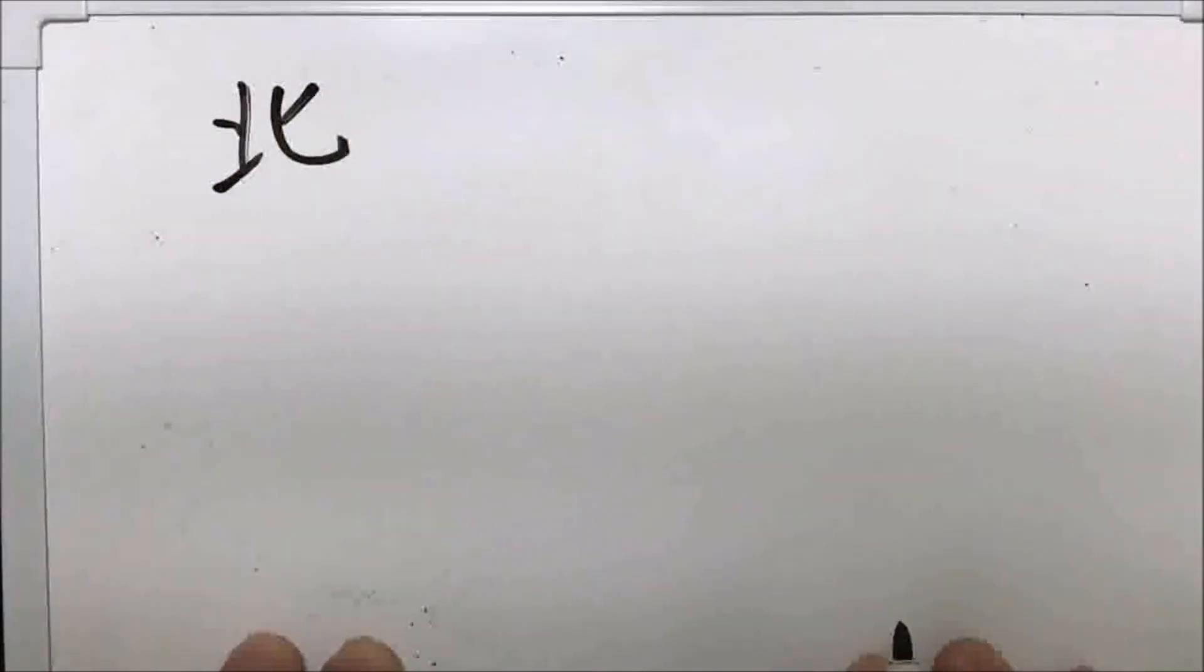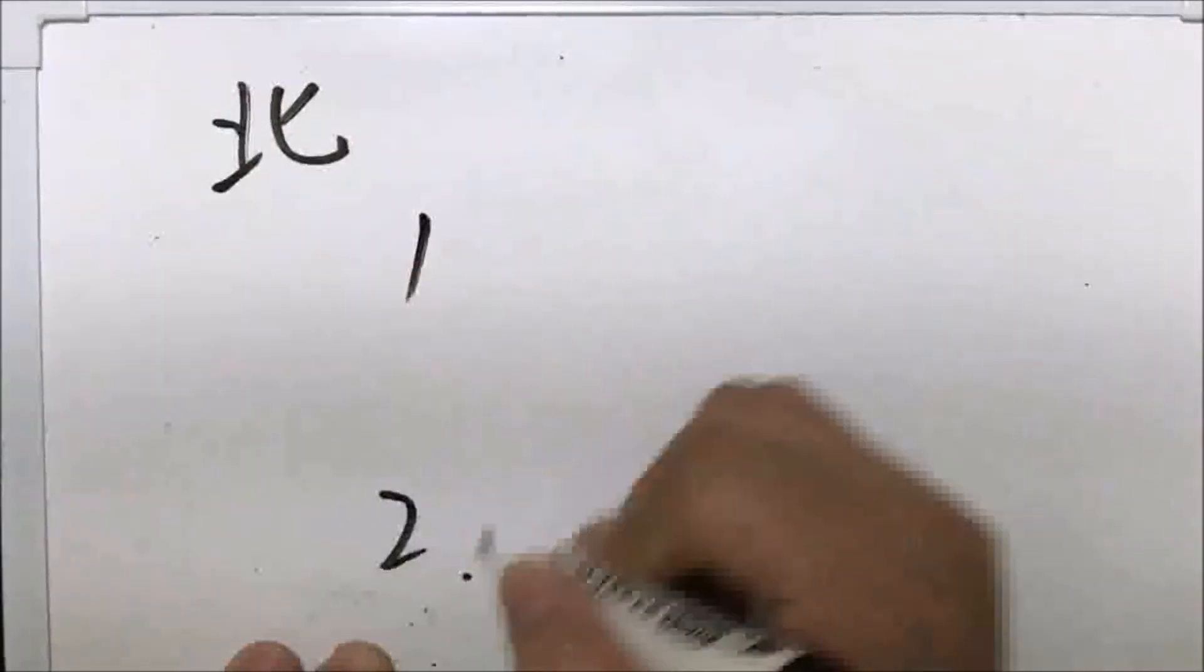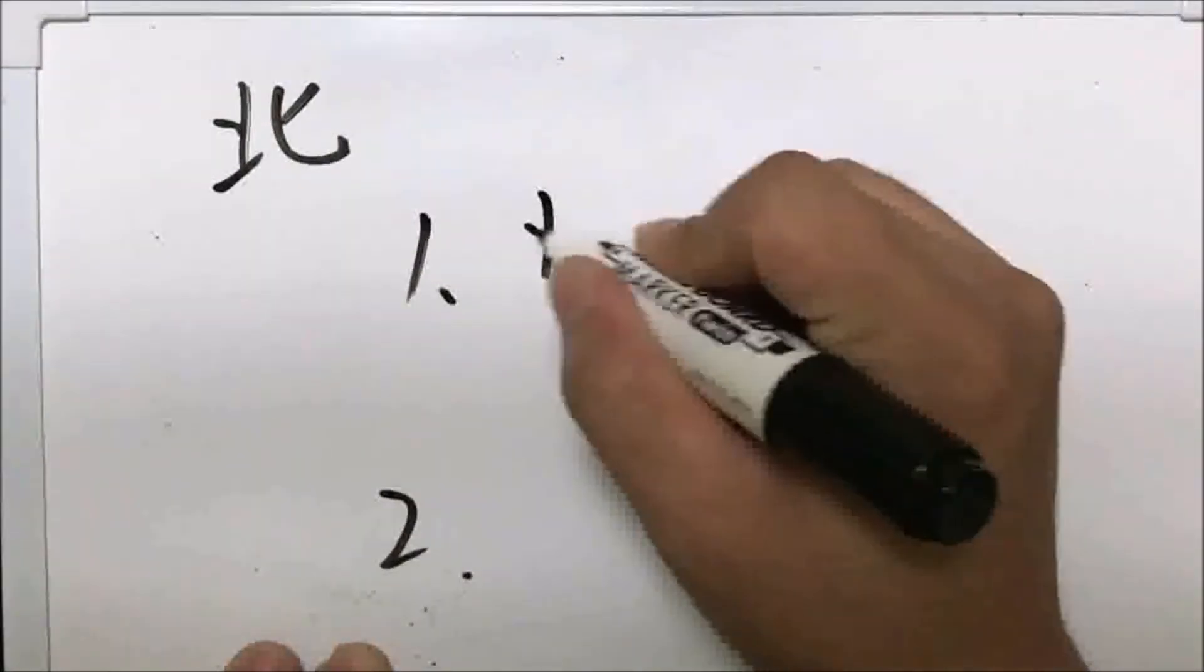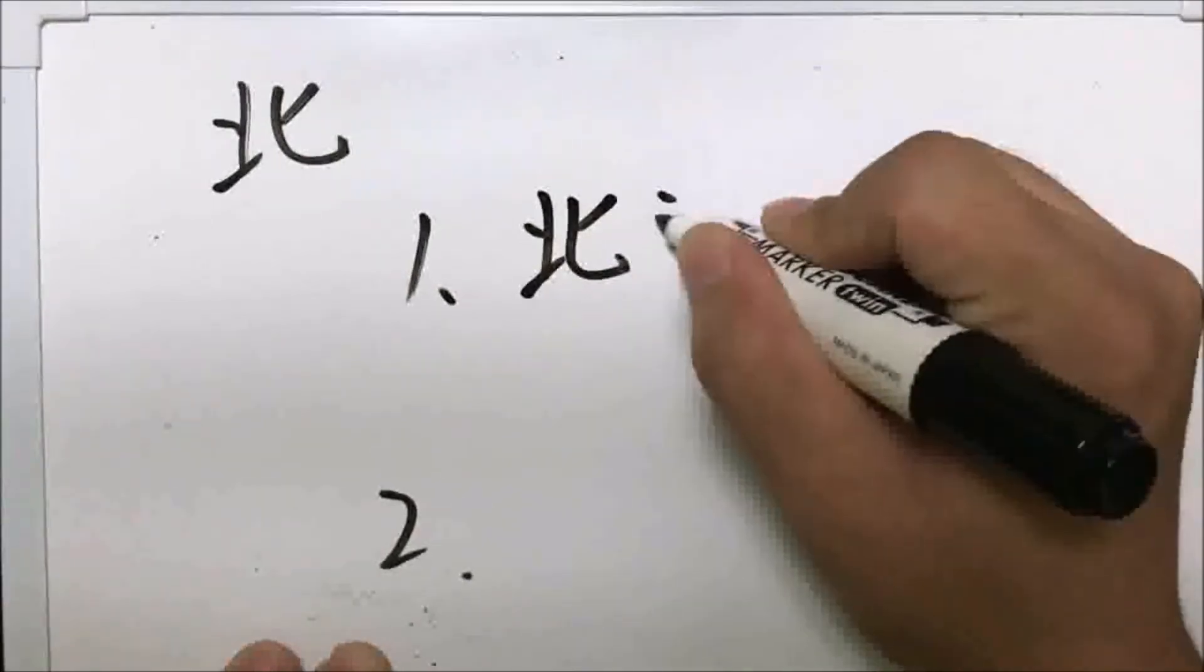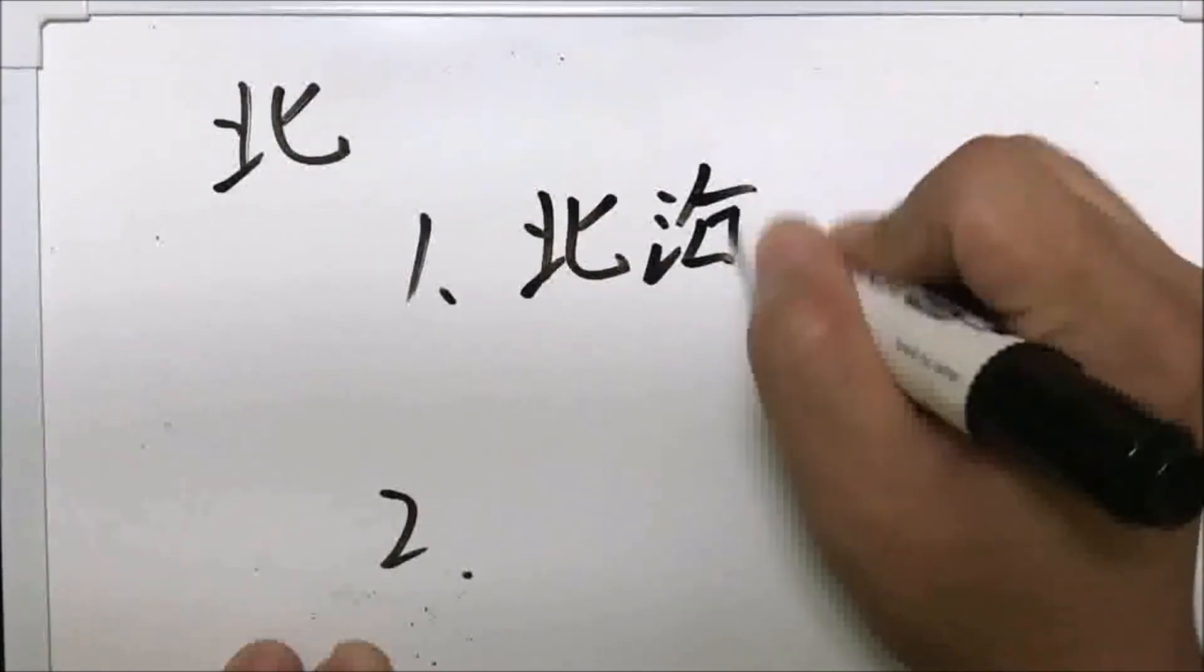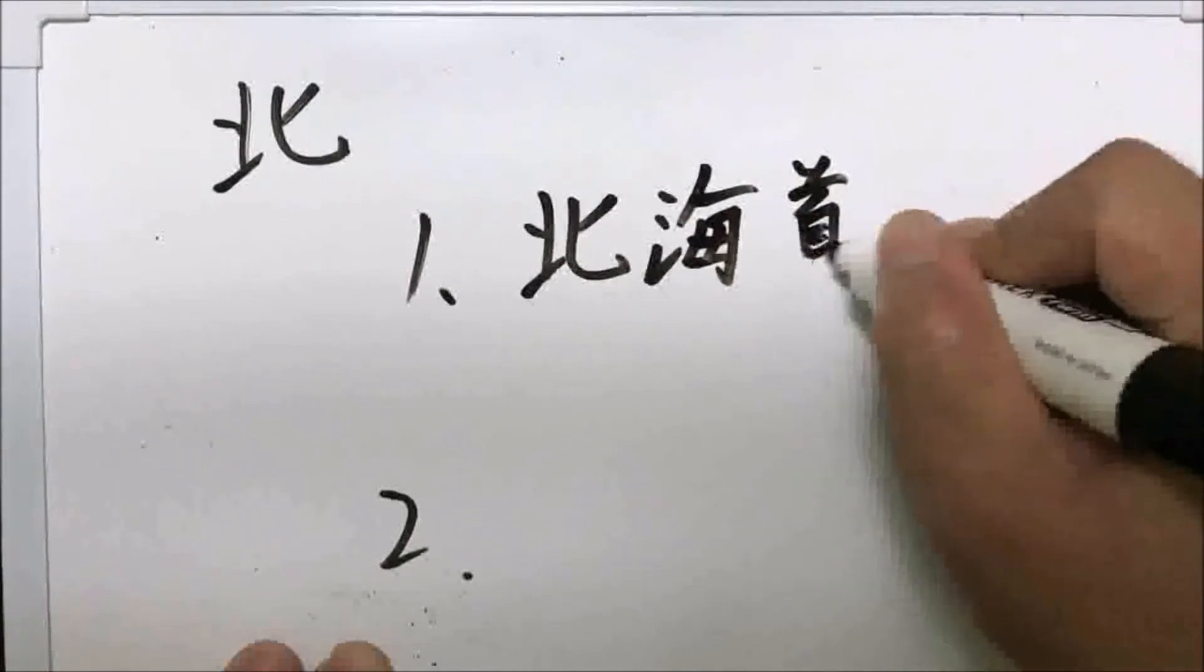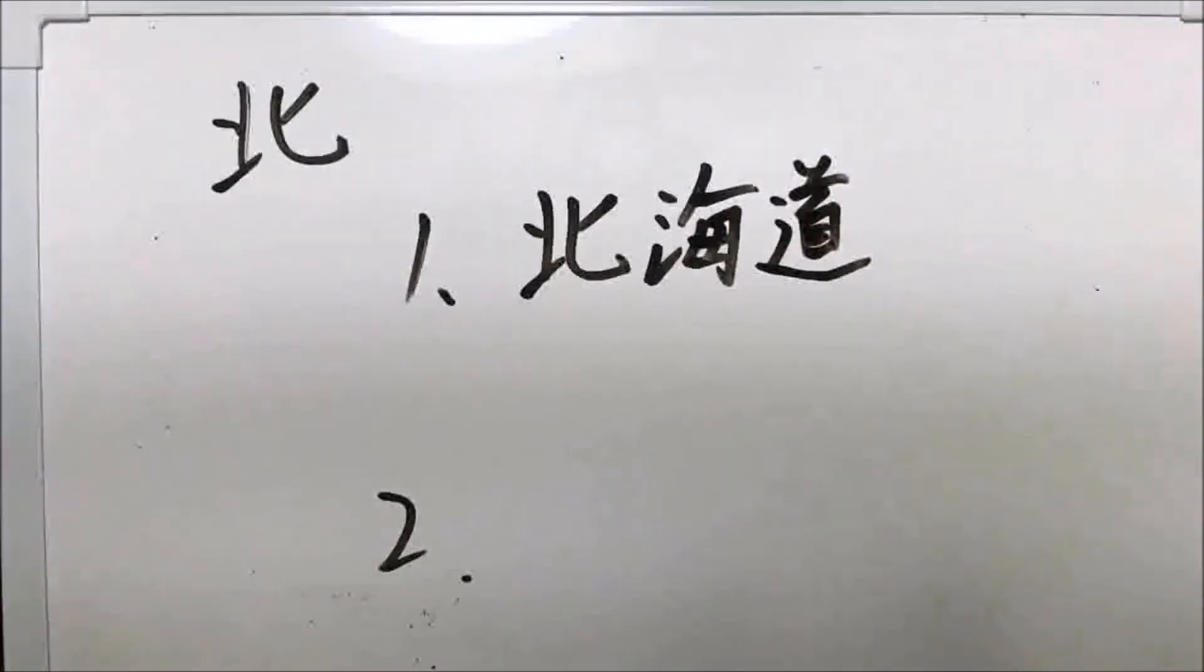Kita or hoku. Now I'll teach you two kanji words. First, do you know this? If you have experience coming to Japan or traveling to Japan, maybe you know this kanji word because this is one of the prefectures in Japan.